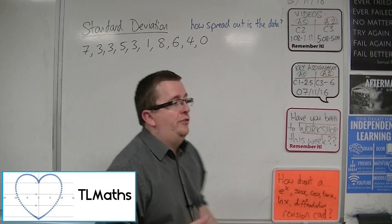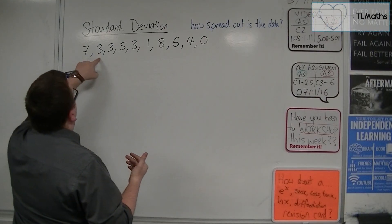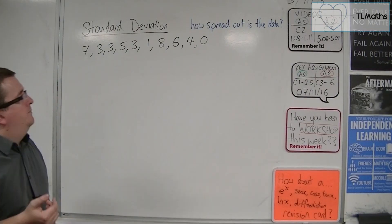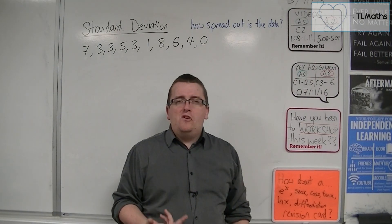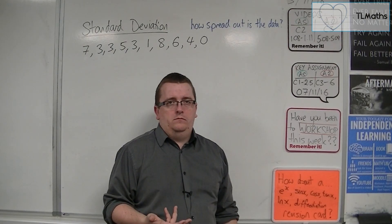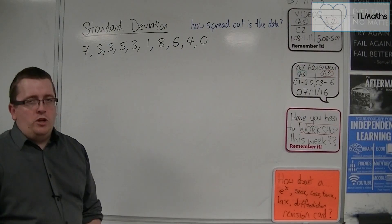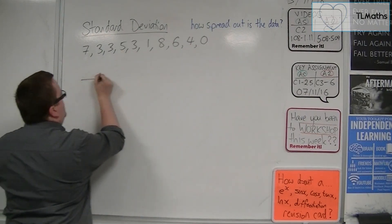Let's say I've got some raw data. There's just a list of numbers: 7, 3, 3, 5, 3, 1, 8, 6, 4, 0. And I want to ask the question, how spread out is this data? Okay, well let's have a look at it. Let's draw a diagram, a number line.